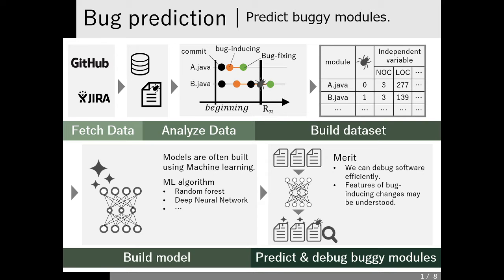Next, we fetch the repository and bug data of the target project from somewhere like GitHub and Jira. Next, we analyze the development history of each module. This figure illustrates the development history of each module. The dots mean commits to the module, and modules get buggy at orange dots and fixed at green dots.